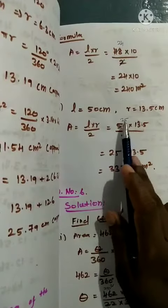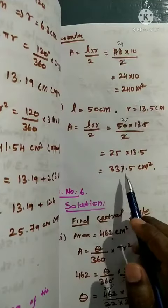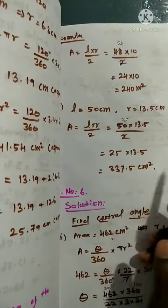First we reduce: 25 into 13.5. Multiplying, we get 337.5 cm².